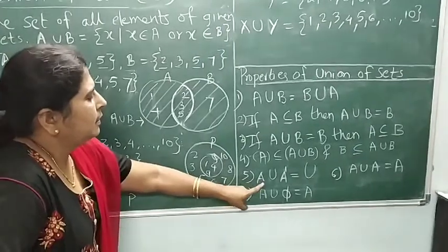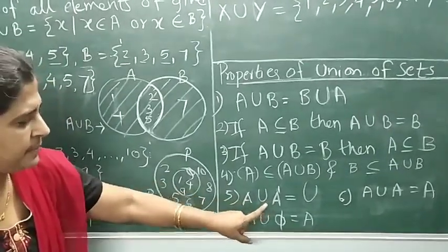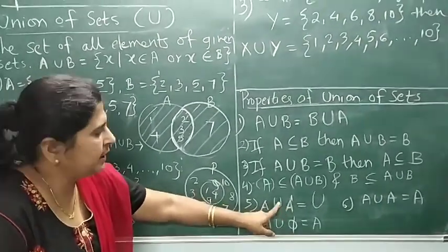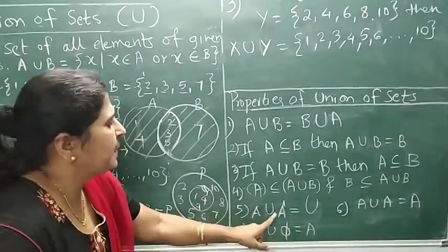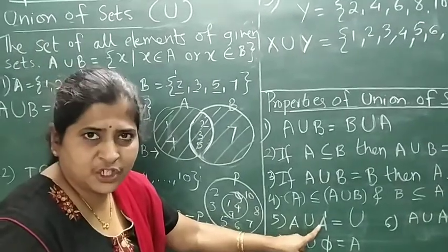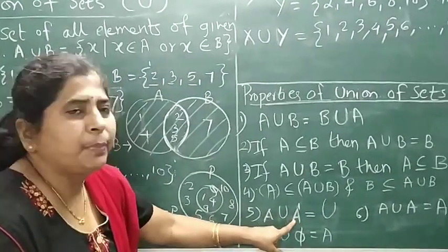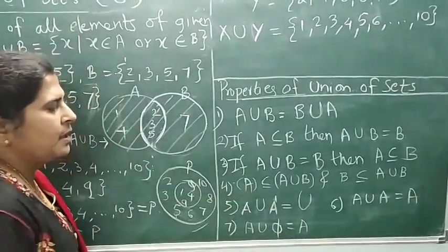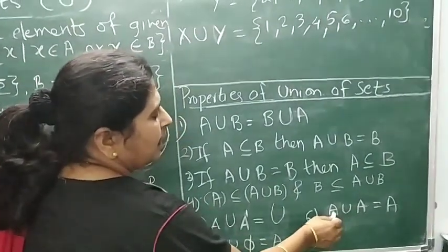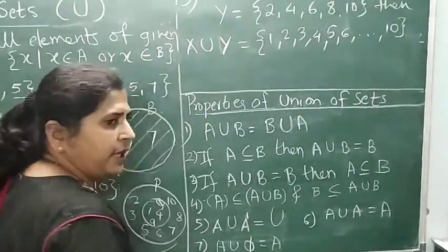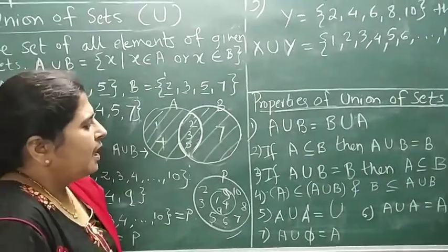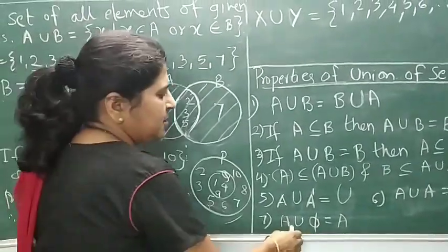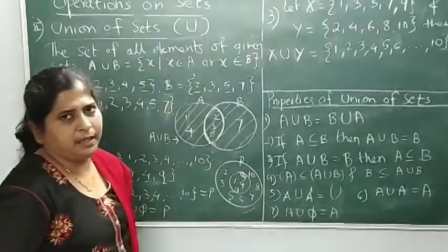What will be A union A dash? A set and its complementary set. All elements of set A and complementary set give us universal set. A union complement of A equals universal set. What is A union A? Union of A with itself is nothing but the same set A. And what is the union of any set A with empty set? As empty set has no element, its union is again the original set A.